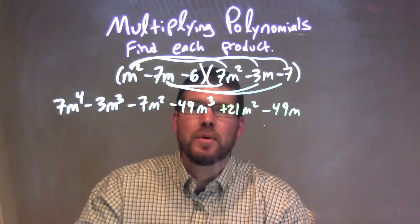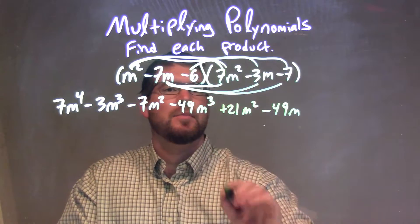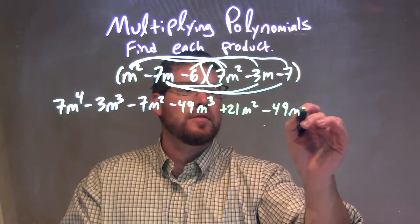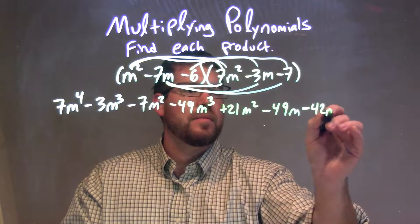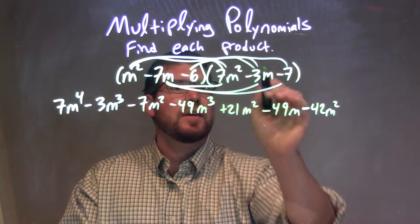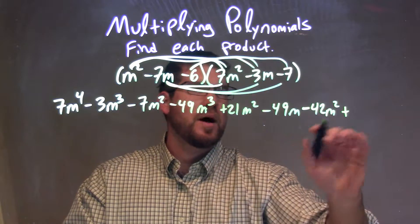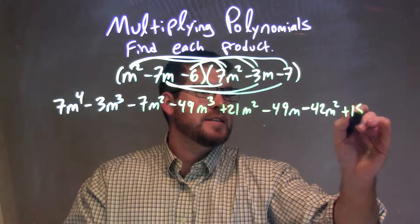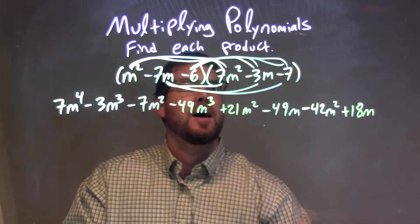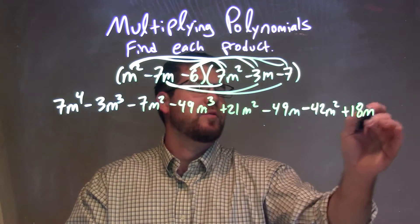So lastly we have the minus 6. We take minus 6 times 7m is minus 42m squared, minus 6 times minus 3m which is a positive, a negative times a negative is a positive, positive 18m, and minus 6 times minus 7 is a positive 42.